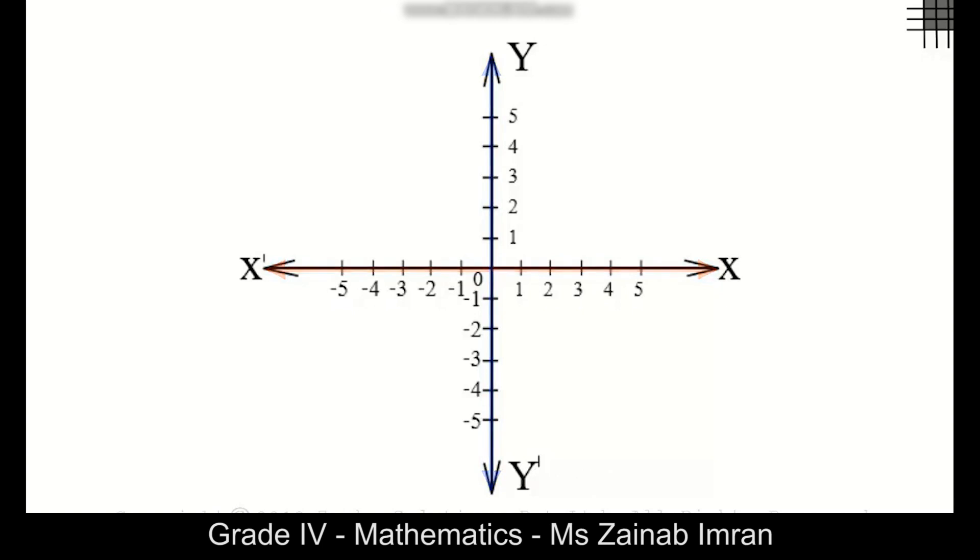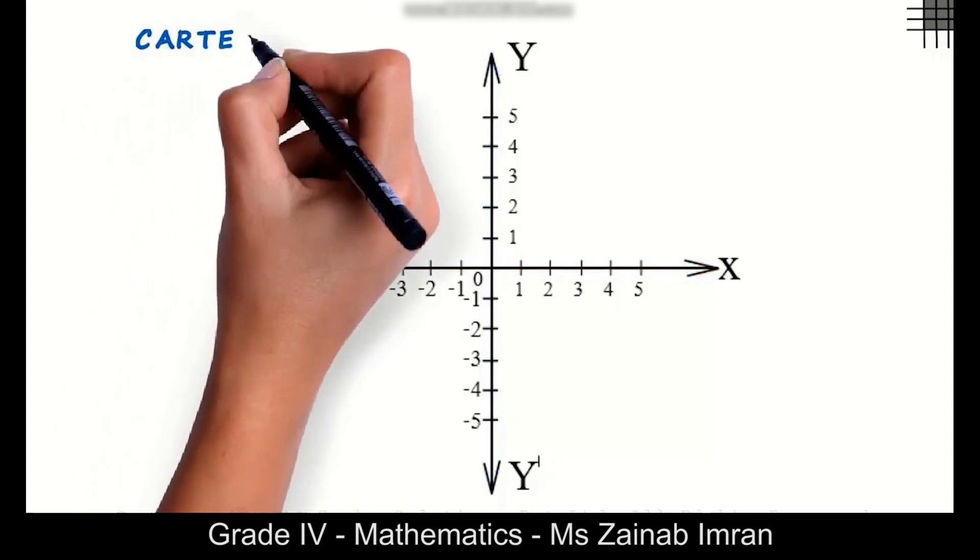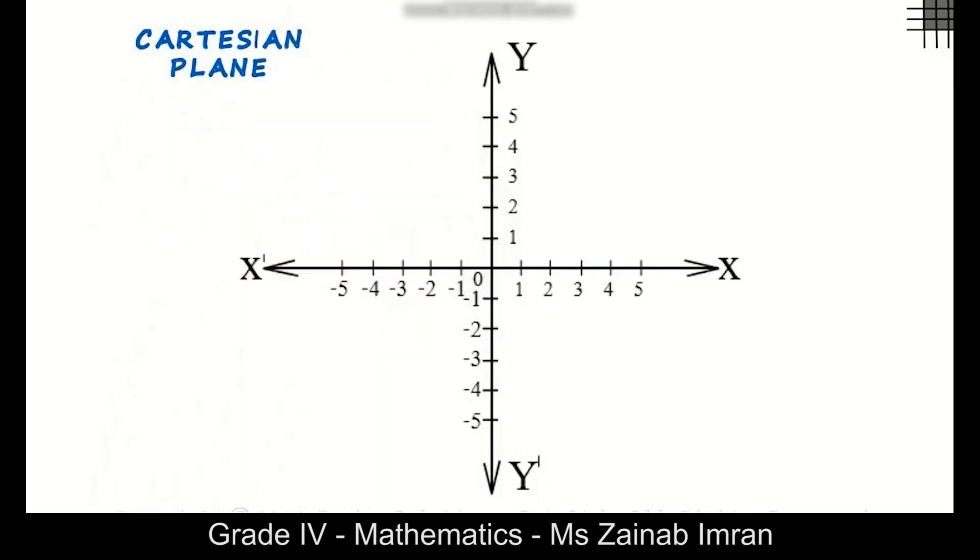Let's look at the x and y axes. These axes are used to recognize a point on one plane. This plane is called the Cartesian plane. As we can see, the Cartesian plane is divided into four parts or regions.